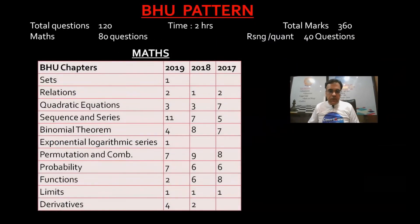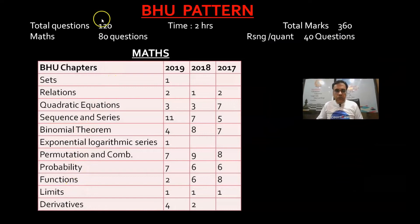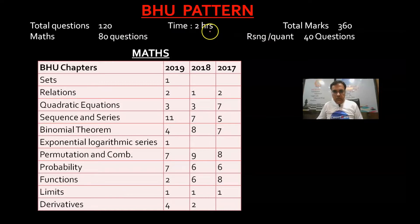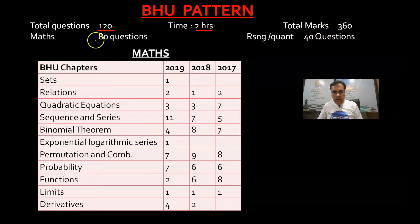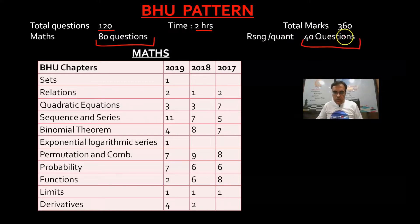What was in BHU? How many questions were there? 120 questions total. How much time? 2 hours, meaning 120 minutes. 120 questions — so maximum one question per minute. Total marks? 360, meaning 3 marks for each question. Maths has 80 questions, and Reasoning/Quant (aptitude) has 40 questions, 3 marks each. So 120 questions, 120 minutes, 360 marks — 80 Maths and 40 Quant Reasoning. This is how the whole paper looks.